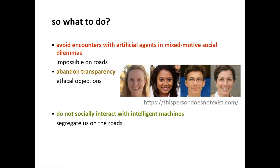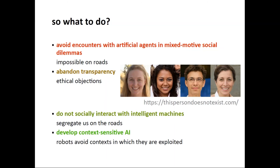Another option is just not to socially interact with intelligent machines at all — if it comes to traffic, segregate us on the roads: humans drive in separate lanes, machines drive in separate lanes, and we just don't mingle. Another option is to develop context-sensitive artificial agents, where robots would themselves actively avoid contexts in which they are most likely to be exploited by humans. So a self-driving car could use some protocol to identify narrow sections of the city or roads where it predicts being stuck because humans will not give it way, and avoid those sections when planning its driving route.